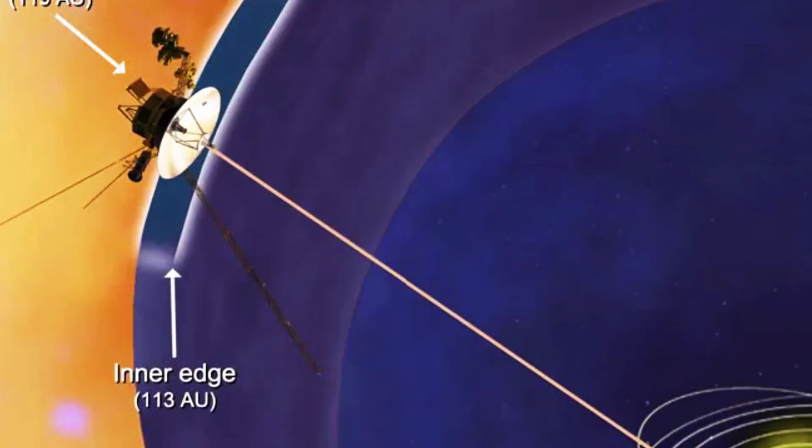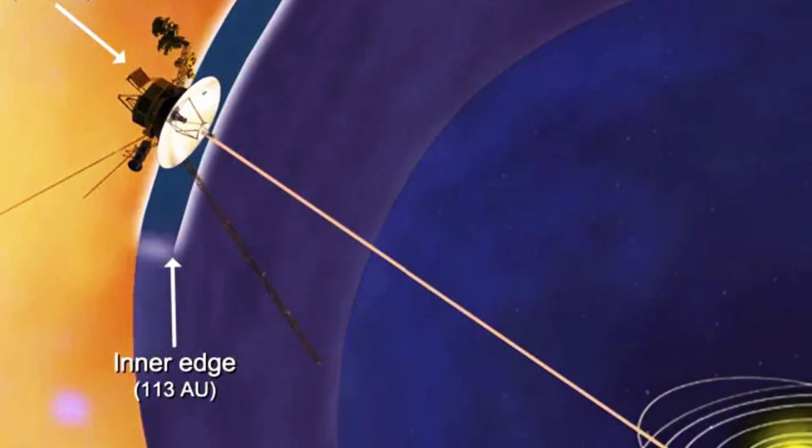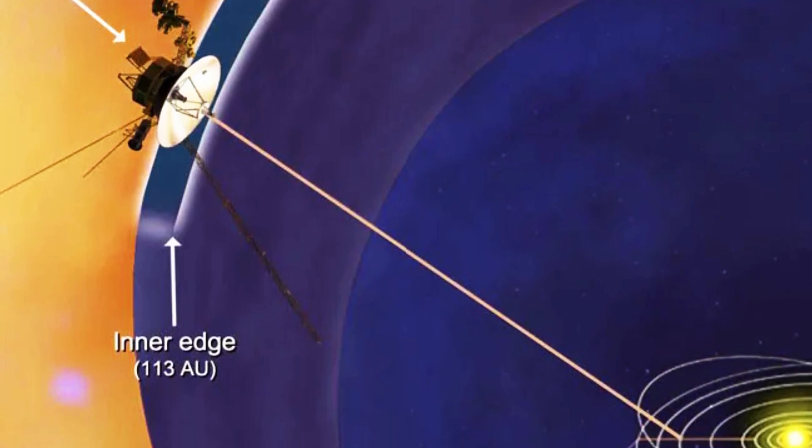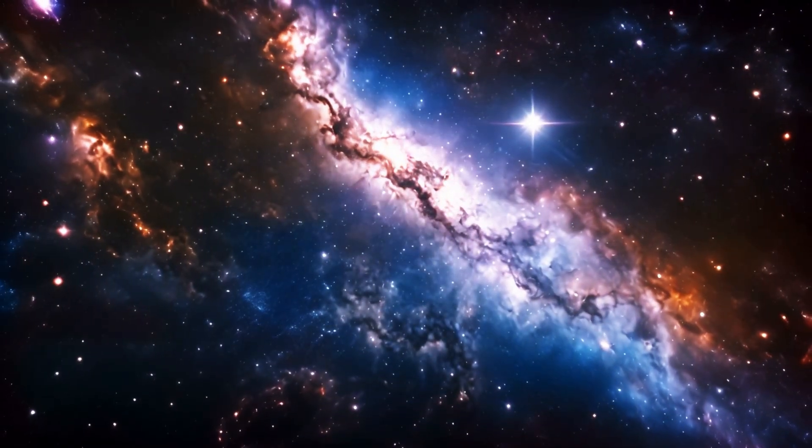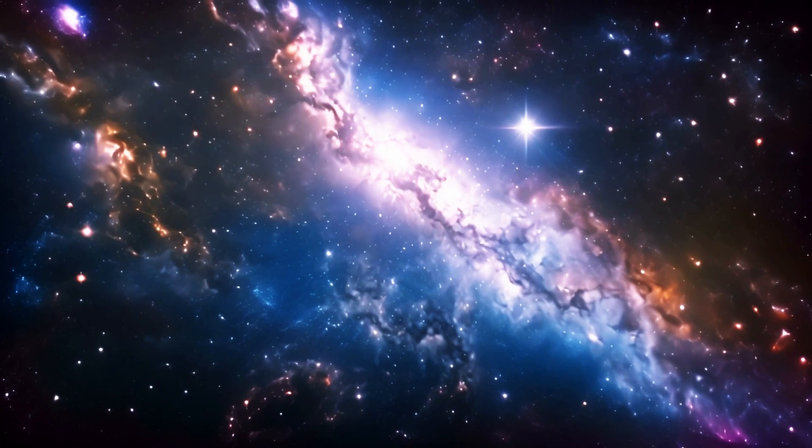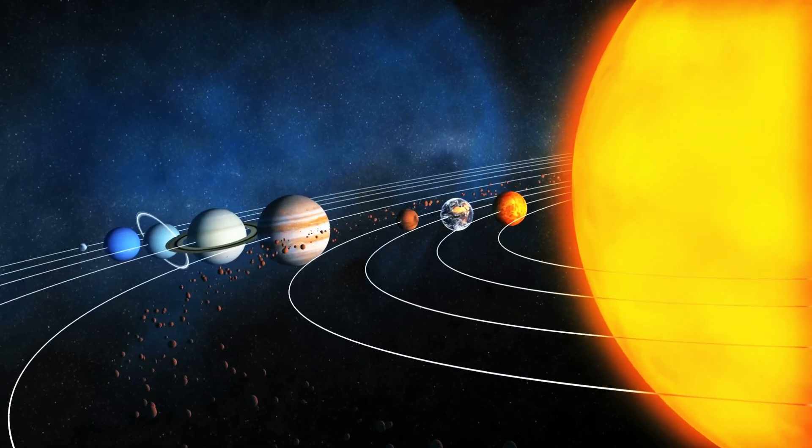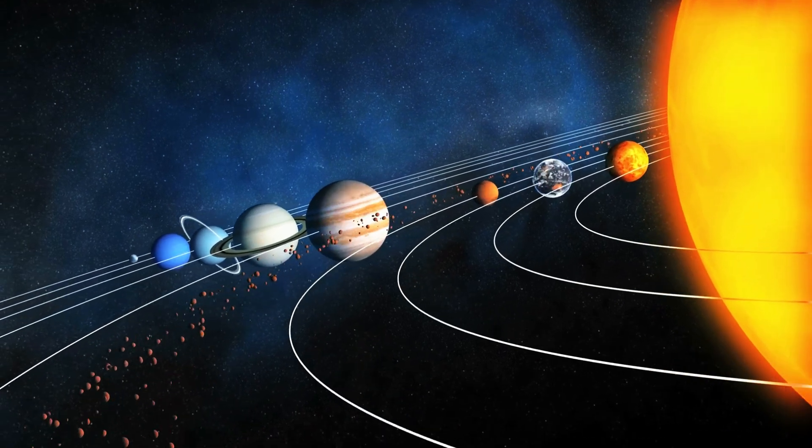One of the Voyager's most significant discoveries was that the interstellar magnetic field is two to three times stronger than previously estimated. This suggests that interstellar particles exert 10 times more pressure on the heliosphere than expected. Such insights deepen our understanding of stellar interactions and apply to other stars under study, indicating that similar processes occur in other planetary systems.